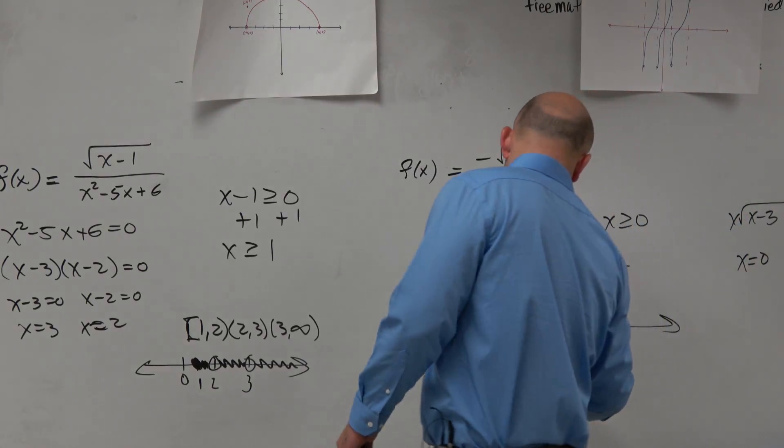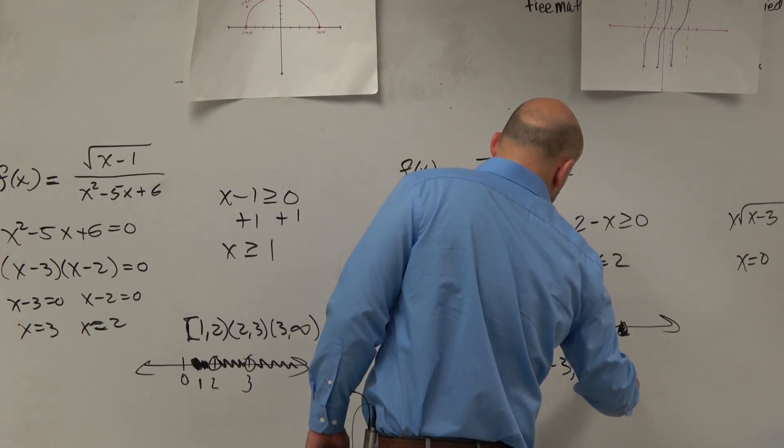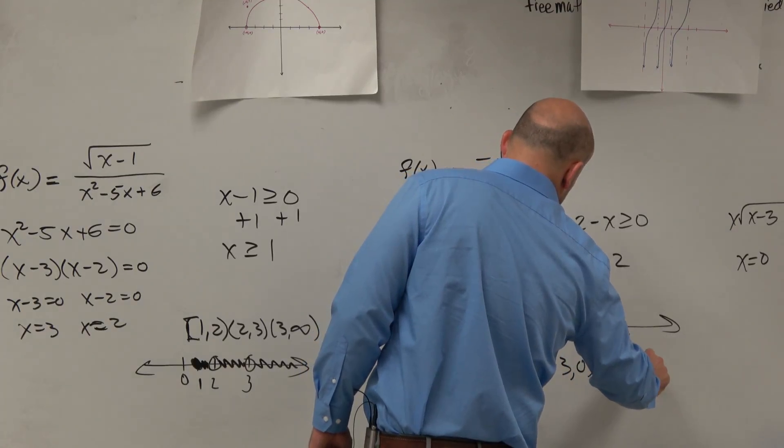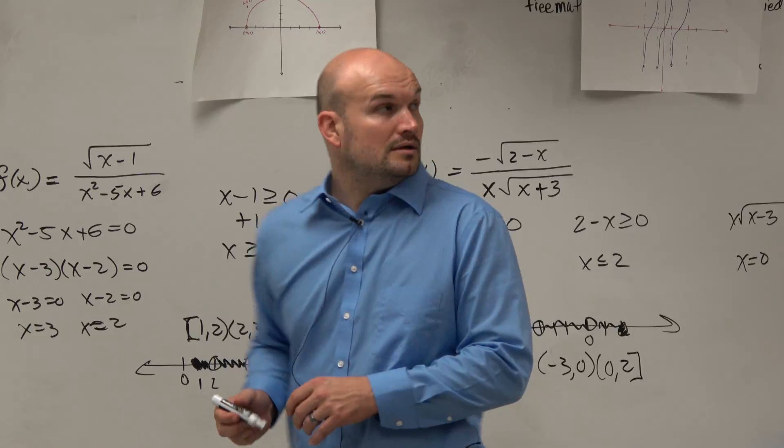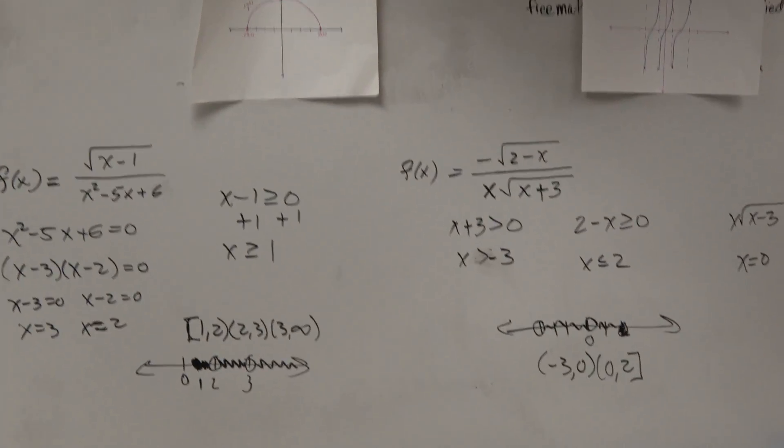So it looked like this. So my domain is from negative 3 to zero, and then from zero to 2. Before you guys put things away, I'd recommend you guys have this written down if you didn't already.